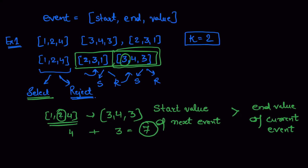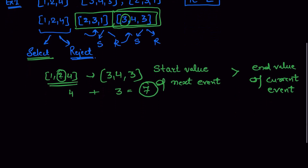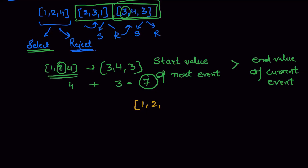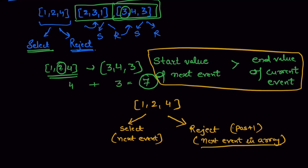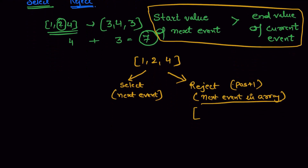Now let's talk about the complexity of this solution. When we are at event [1,2,4] we have two options: select it, meaning we find the next valid event, or reject it, meaning we move to position plus 1. In both branches we are finding the next event — in the reject case it is simply position plus 1, while in the select case we need to apply logic to find the next event whose start value is greater than the current event's end value.